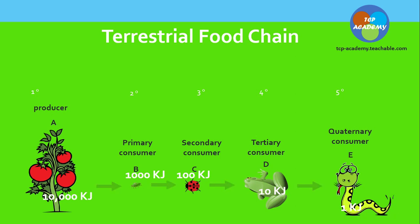Here we have a representation showing one degree, two degree, three degree, four degree, five degree — it looks like that. This is how we represent the trophic level. So the first trophic level, second trophic level, third trophic level, fourth trophic level, and the fifth trophic level — that's what we're seeing with those numbers, and that is how the representation is done.